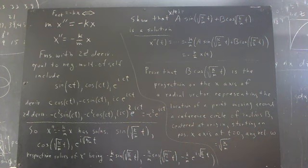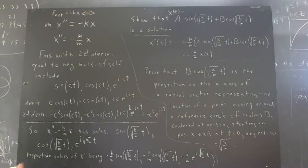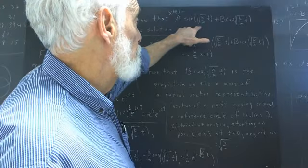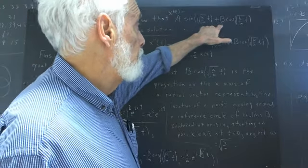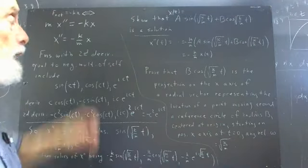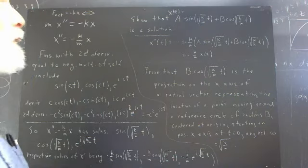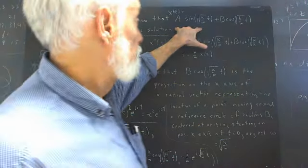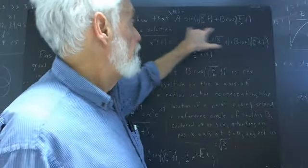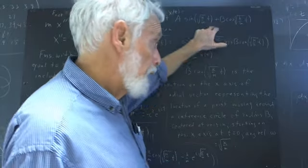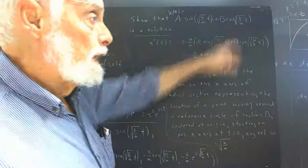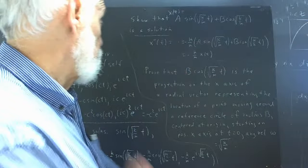Now we've asked you also to prove or show that x of t equals a times the sine of the square root of k over mt plus b times the cosine of the square root of k over m times t is also a solution. And that's quite straightforward. This is a linear combination of the sine and the cosine function. A constant multiple of the sine and a constant multiple of the cosine function added together. That's a linear combination. And that understanding and that terminology is going to be very important in your future.